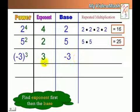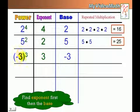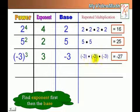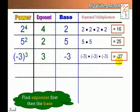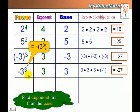Now take a look — the exponent is 3, but the base is inside a group symbol. The entire group is the base. The group contains negative 3, so the base is negative 3. We represent that in factor form as negative 3 times negative 3 times negative 3, which equals negative 27.